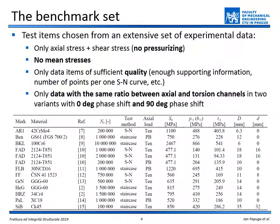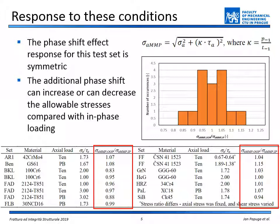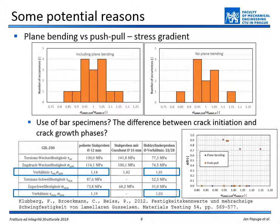Based on our experimental database we established a test set of 15 pairs of in-phase and out-of-phase load scenarios. Their experimental output is indecisive because both worsening or increasing of the fatigue strength can be observed. The situation didn't change dramatically even when we tried to remove some potential parasitic effects.